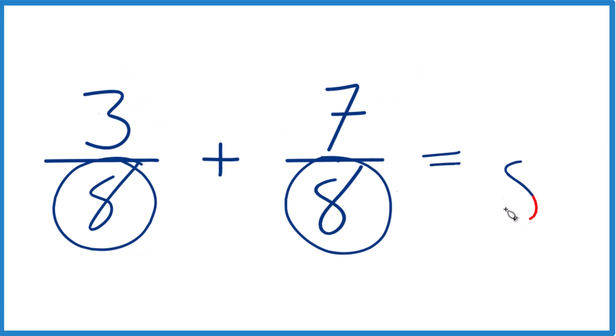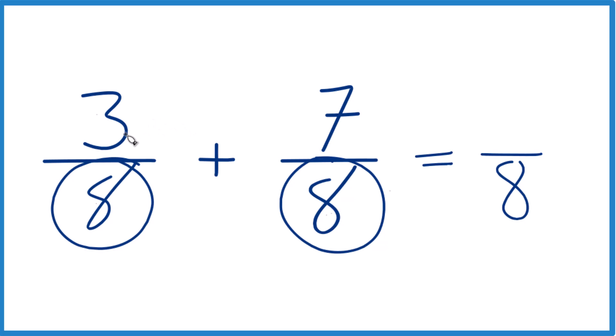So we'll bring that across, we just keep that as 8. Then we just add the numerators together. 3 plus 7, that gives you 10. So we end up with 3 eighths plus 7 eighths, that equals 10 eighths.